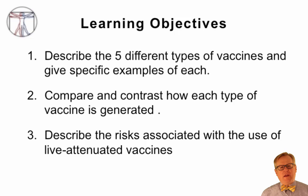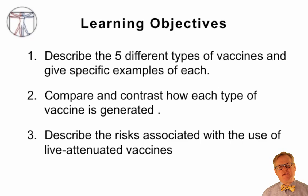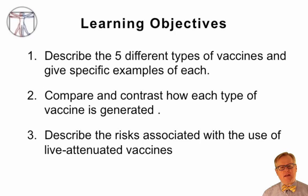There are three learning objectives that go along with this video. First, to describe the five different types of vaccines and give specific examples of each. Second, compare and contrast how each type of vaccine is generated. And third, describe the risks associated with the use of live attenuated vaccines.